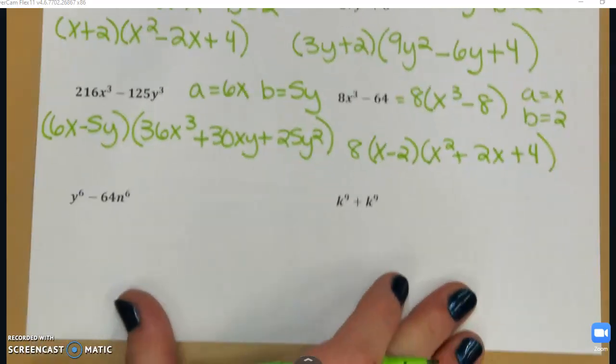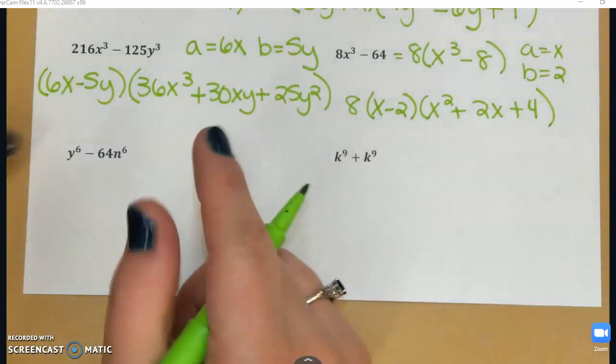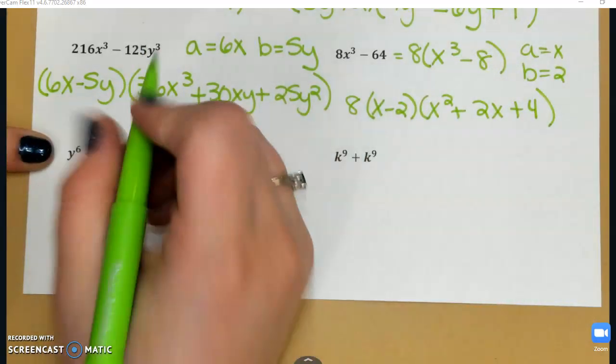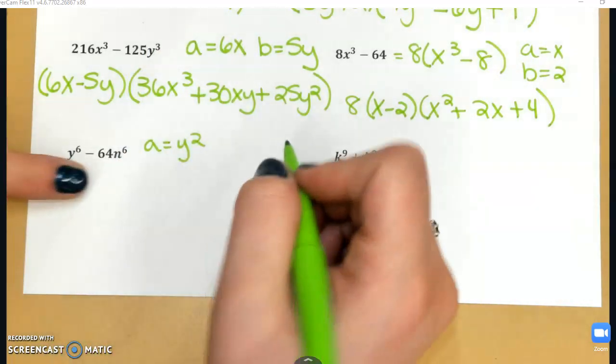And on to that last row. y⁶ - 64n⁶. This is a difference of cubes. a is going to be y², and b is going to be 4n².